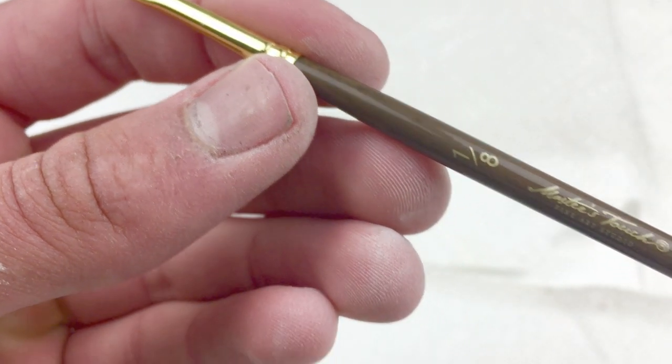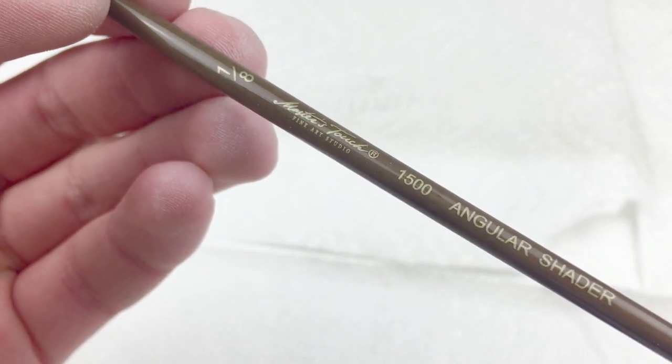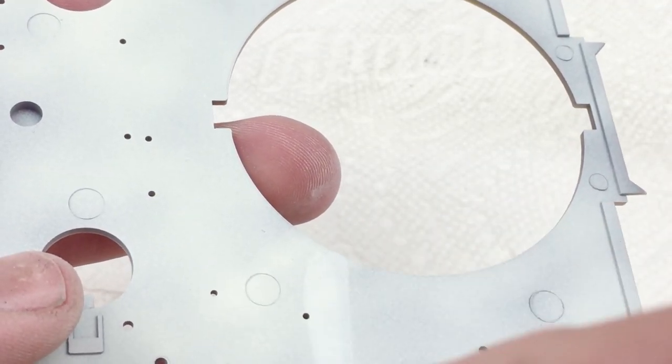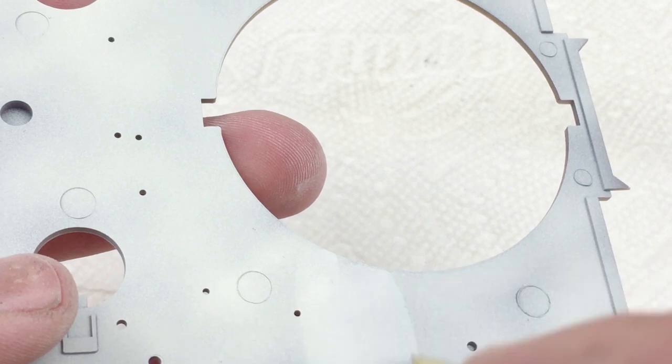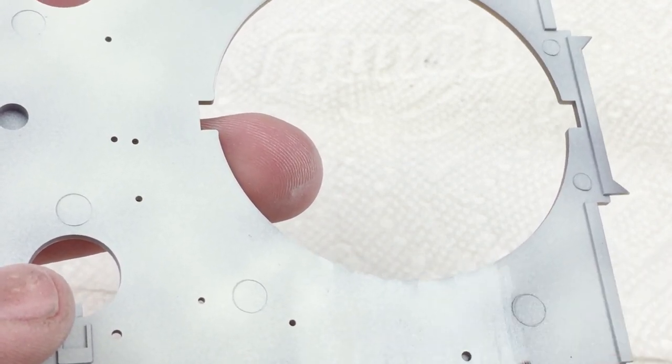To begin the chipping I'm going to use this 1/8th inch angular shader and some tap water. Hairspray chipping is super easy if you set it up correctly. All you do is wet the section you're working on and then scrub it out with your brush.